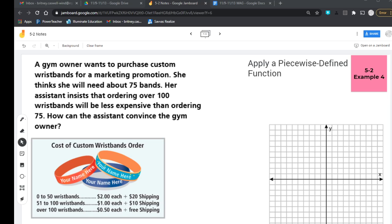In this problem, there's a gym owner who wants to purchase custom wristbands for a marketing promotion. She thinks she's going to need about 75 bands. Her assistant insists that ordering over 100 wristbands will be less expensive than ordering 75. So sometimes it's cheaper to buy in bulk. And so it says, how can the assistant convince the gym owner?